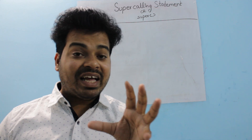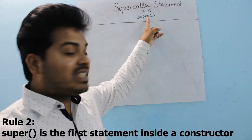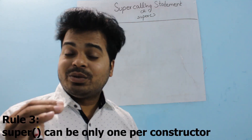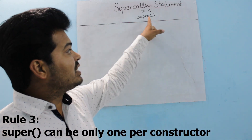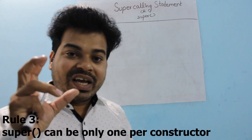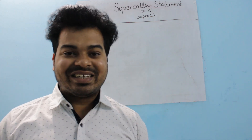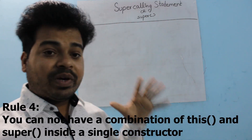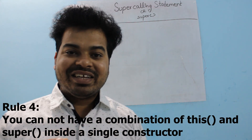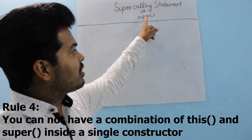Rule number two: the super calling statement should be the first statement in the constructor. Rule number three: there can only be one super calling statement inside a single constructor. Rule number four: you cannot have a combination of the 'this' calling statement and the super calling statement inside a single constructor.